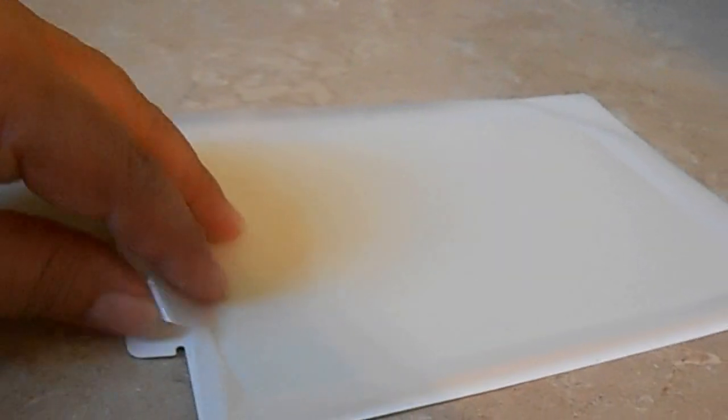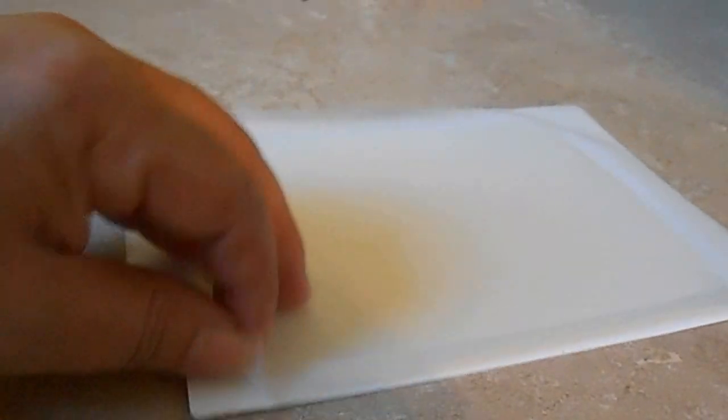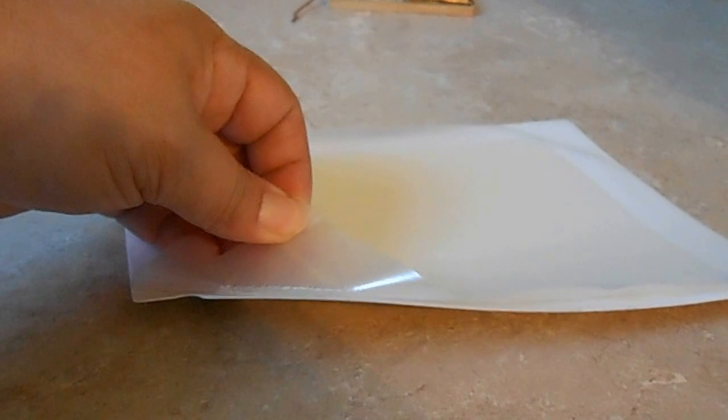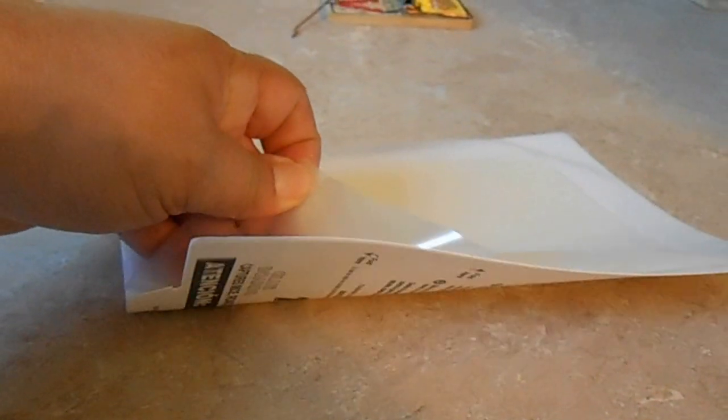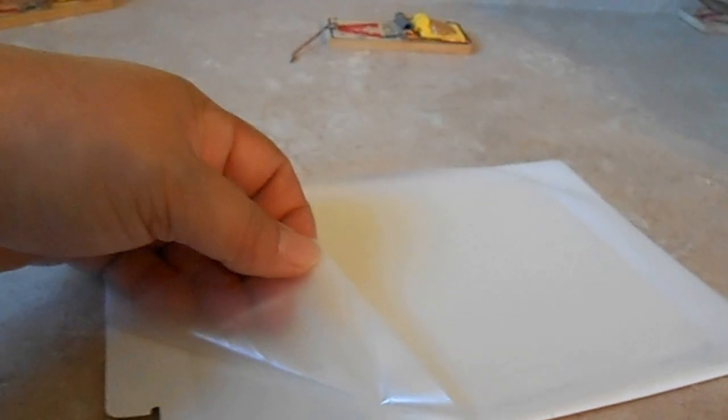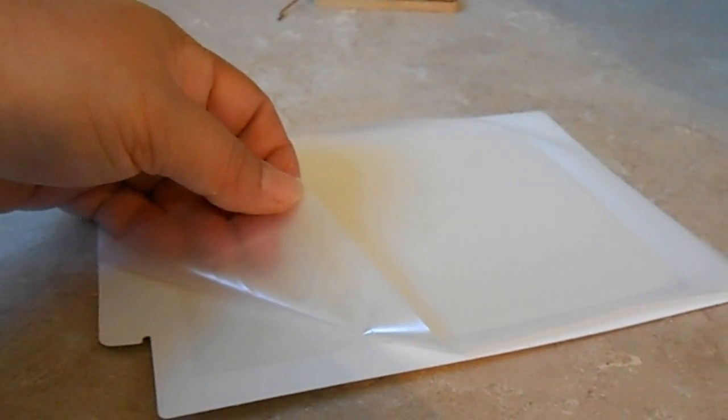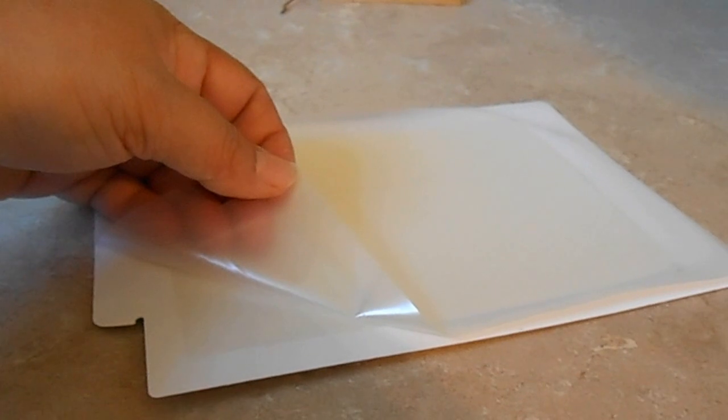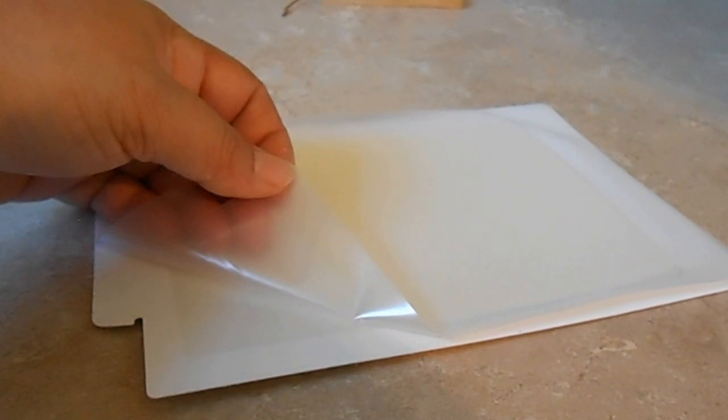They come in a variety of different sizes, and all you need to do is unpeel it. You can see how hard that is to pull away. You're just going to unpeel it completely, and then set this trap in the line of the path where you believe the mice are crossing in your home.